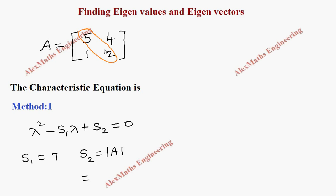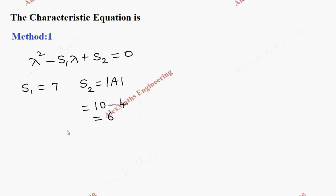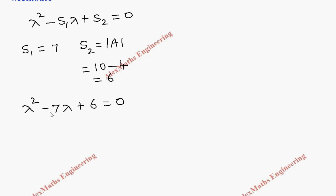S2 is the value of the determinant of A. To find the determinant of A we multiply the leading diagonal: 5 times 2 is 10, minus we multiply the other elements which is 4, therefore we get 6. So from this we get the characteristic equation: lambda squared minus 7 lambda plus 6 equals zero. We have a quadratic expression — product is 6, sum is minus 7 — so this factors as lambda minus 1 times lambda minus 6 equals zero.